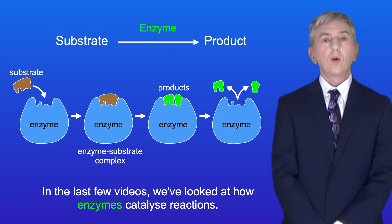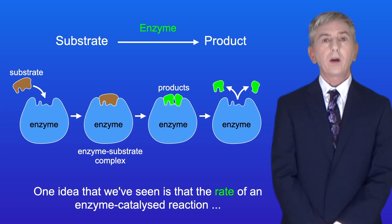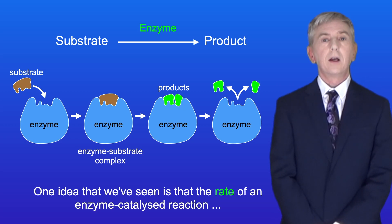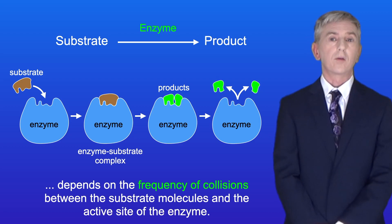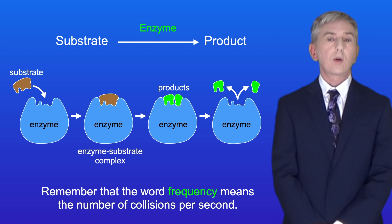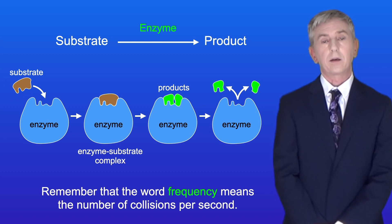In the last few videos we've looked at how enzymes catalyze reactions, and one idea we've seen is that the rate of an enzyme catalyzed reaction depends on the frequency of collisions between the substrate molecules and the active site of the enzyme. Remember that the word frequency means the number of collisions per second.